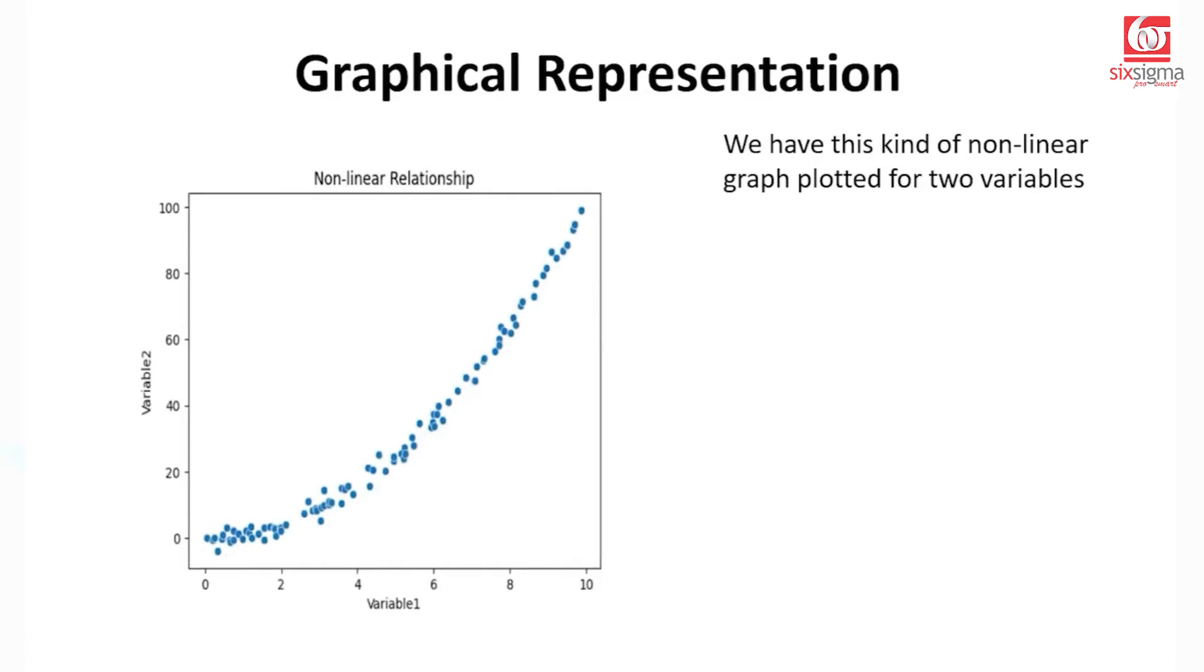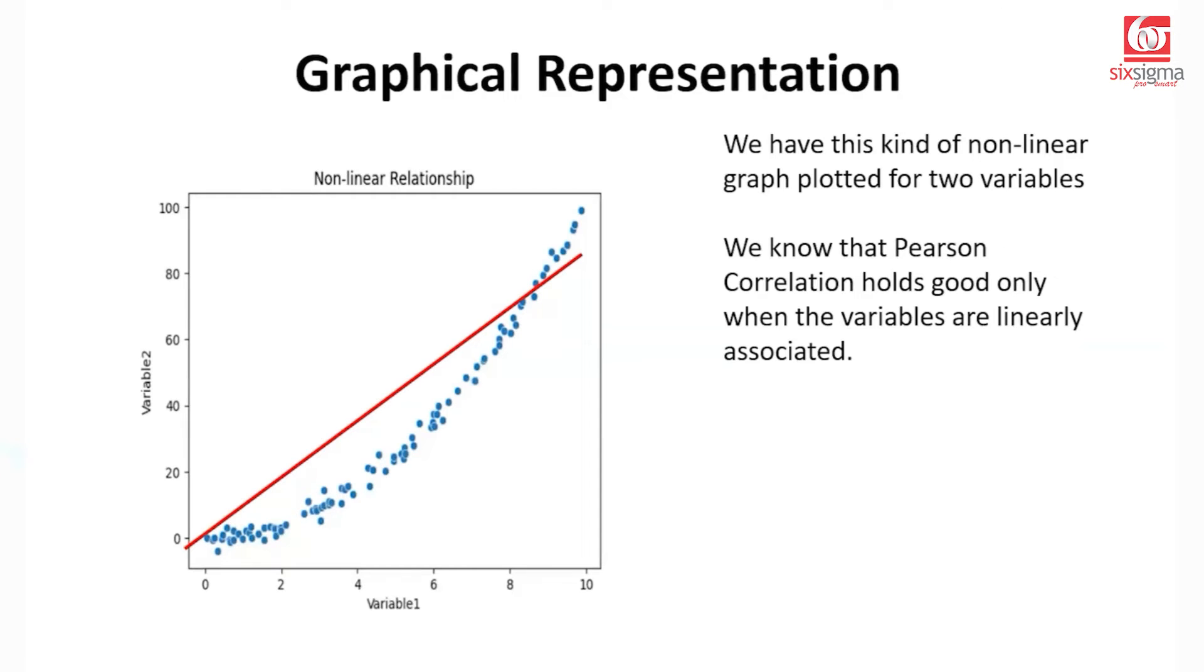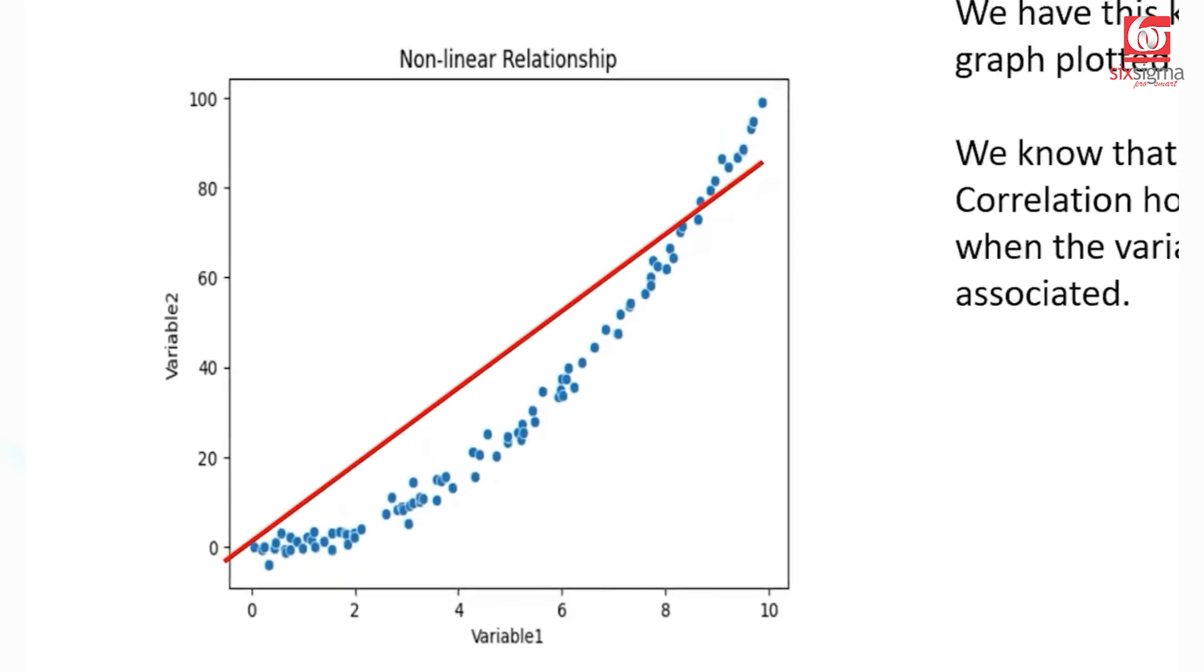To visually understand, our data could be something like this. This data is not linear. This is more of a curve kind of shape. We can of course force a line in this case, but you can imagine this line would not be able to do justice to this kind of data.